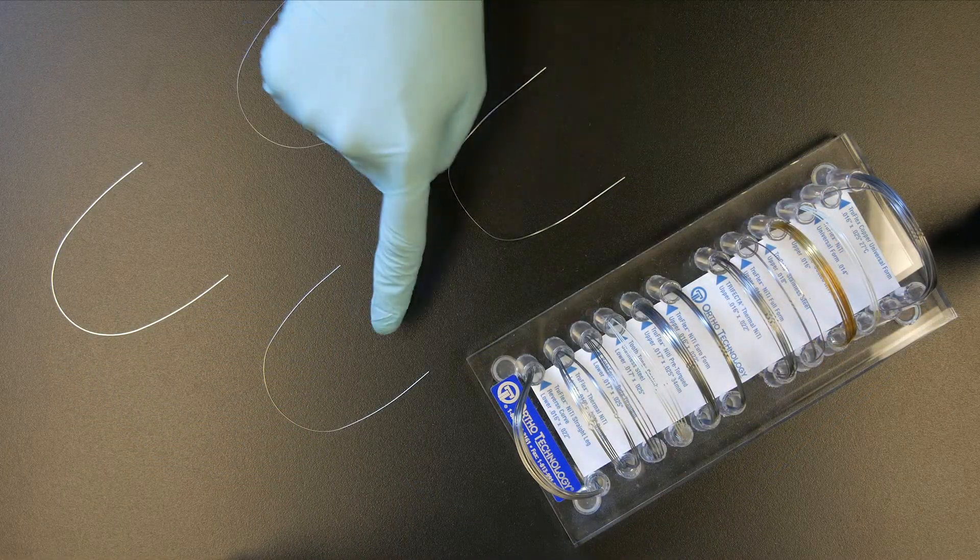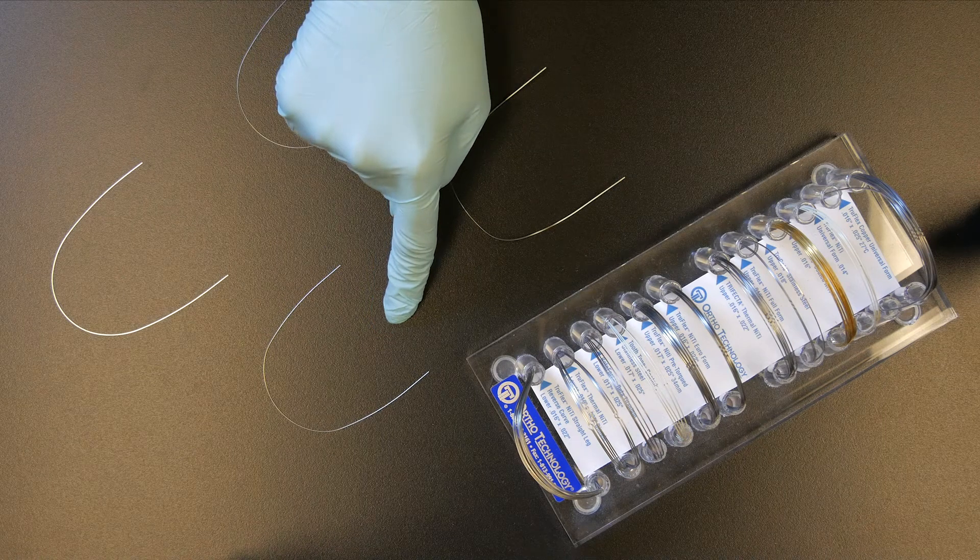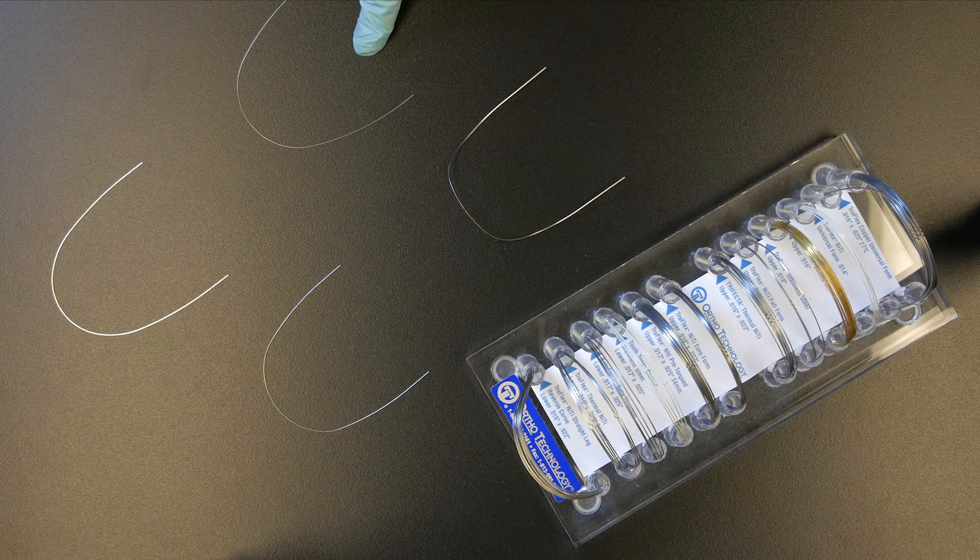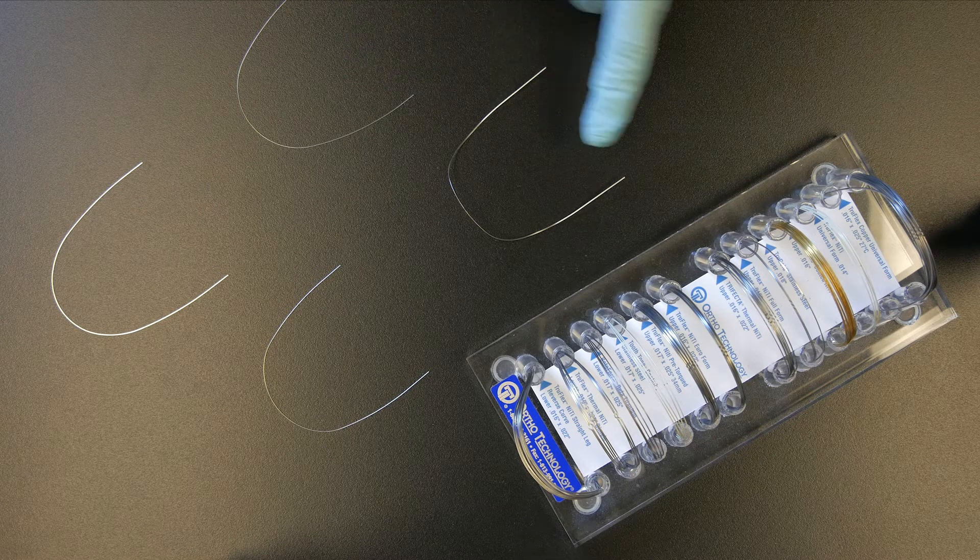We offer this wire in a full form which is a more natural shape, a Euro form which is a more narrow shape, a universal form which is a more broad shape, and the reverse curve of speed.